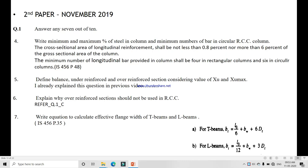Next question, write minimum and maximum percentage of steel in a column and minimum number of bars in circular RCC column. Minimum and maximum percent of steel is 0.8% minimum and maximum 6% of the gross section area of the column, and minimum number of bars used is four for rectangular column and six for circular column. This is given in IS code practice part number 48.